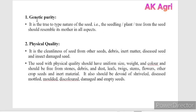The first character is genetic purity. It is nothing but the true-to-type nature of the seed, meaning the seedling, plant, or tree produced from the seed should resemble its mother plant's characters in all aspects.